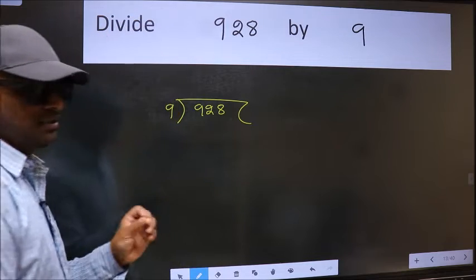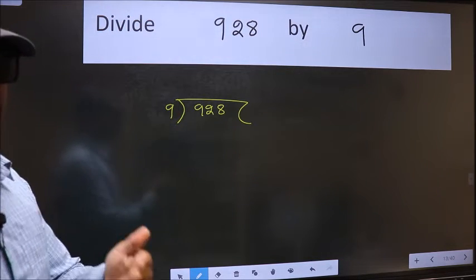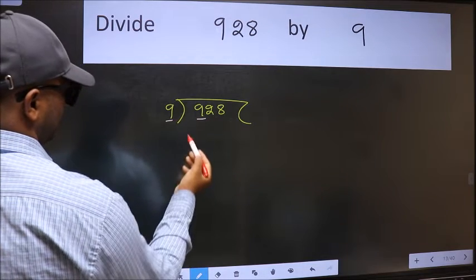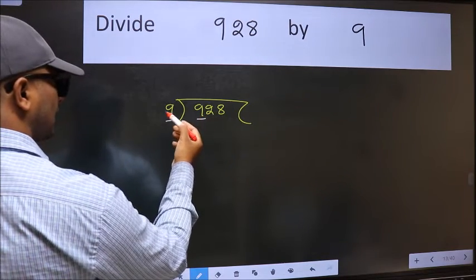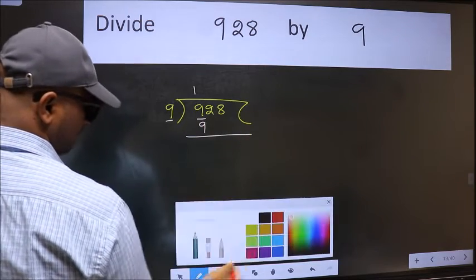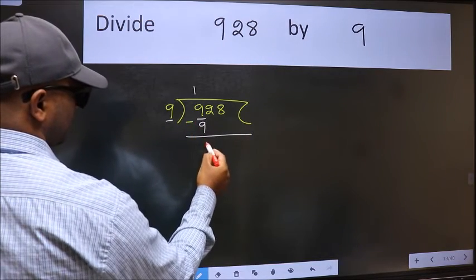This is your step 1. Here we have 9 and here 9. When do we get 9 in the 9 table? 9 once is 9. Now we should subtract. We get 0.